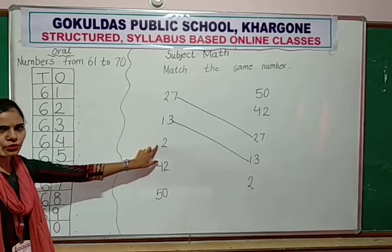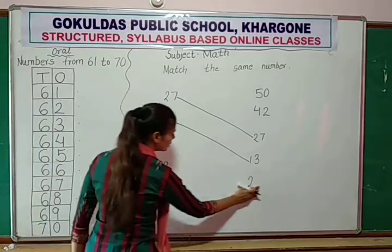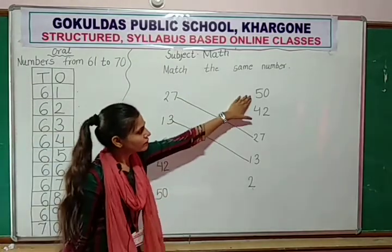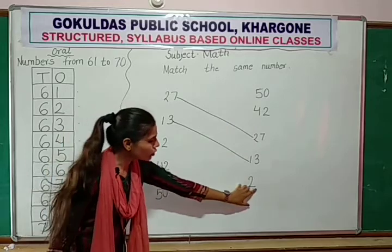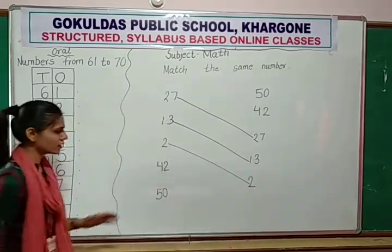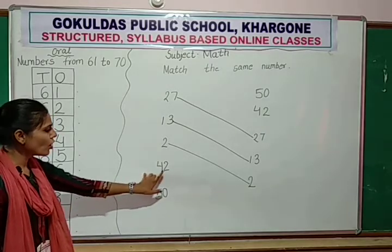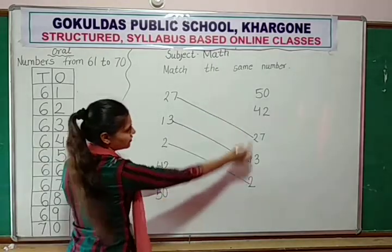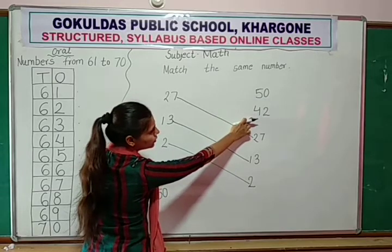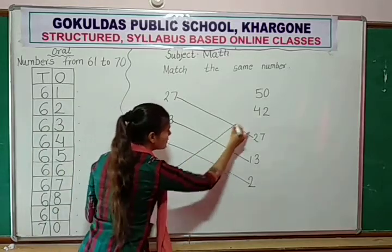Now next. This is number 2. Only number 2. So where is number 2? Check this line again. Here, here, here. So you match number 2. Now this number is 42. Match the same numbers. Where is 42? Check this line. 42? Yes. So this also 42. You match same numbers.